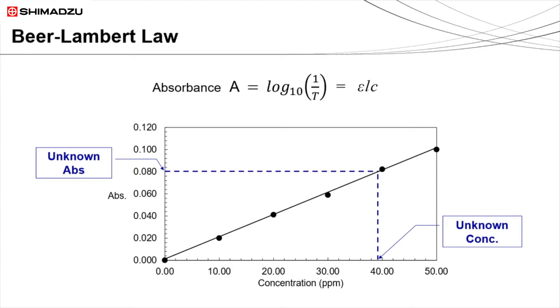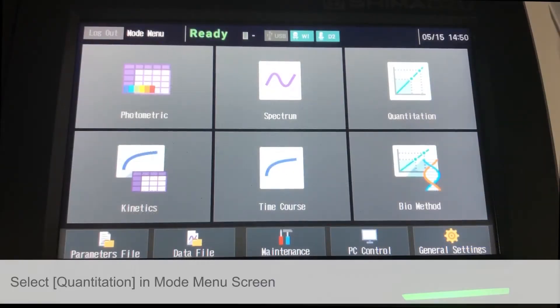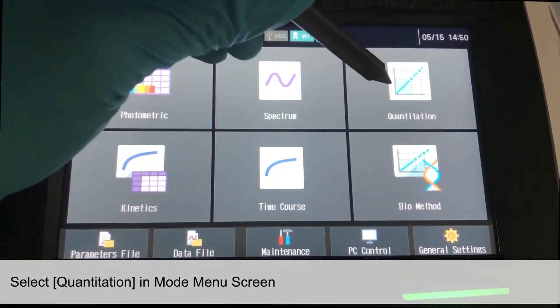Now, let's look at how the UV-1900I conducts a quantitation analysis. From the Mode menu screen, we will select Quantitation.